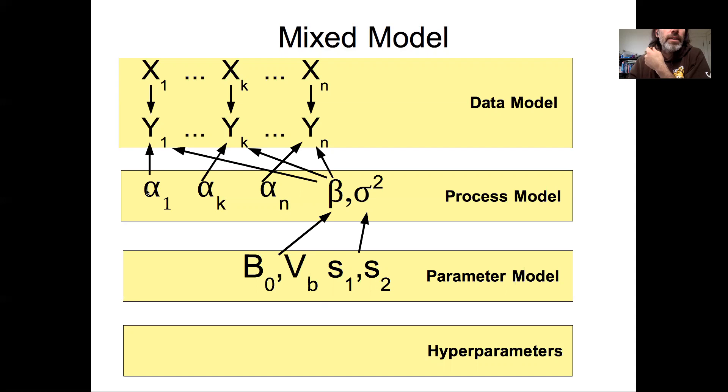So we have these random effects modifying the regression parameters, and then we have estimates of their variability, and then a prior at the highest level on our estimates of parameter variability.